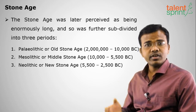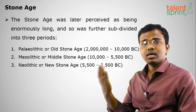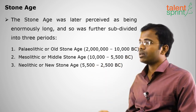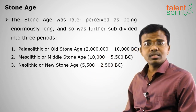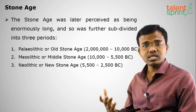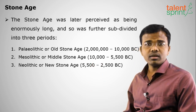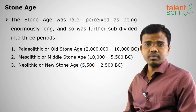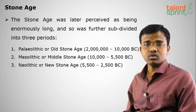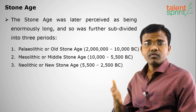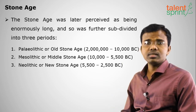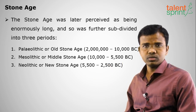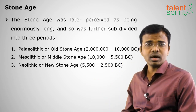The Stone Age is divided into three sections. The first is Paleolithic, next is Mesolithic, and then Neolithic. Paleolithic, also called the Old Stone Age, spans from 2 million BC to 10,000 BC. Mesolithic, or the Middle Stone Age, is from 10,000 BC to 5500 BC. Neolithic, the New Stone Age, is from 5500 to 2500 BC. So the total Stone Age timeline runs from 2 million BC to 2500 BC.